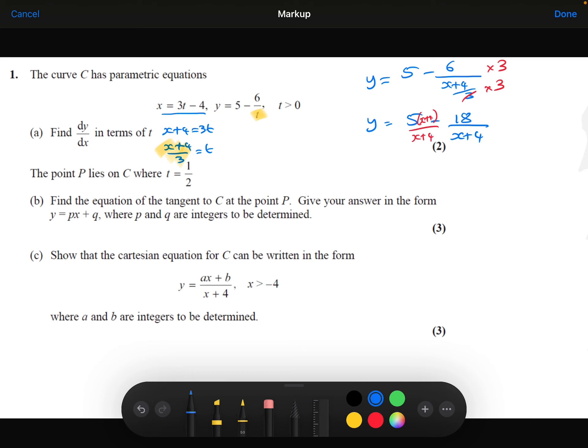And we can now say 5x plus 20 minus 18 over x plus 4, which simplifies to be 5x plus 2 over x plus 4.